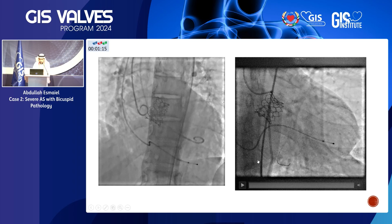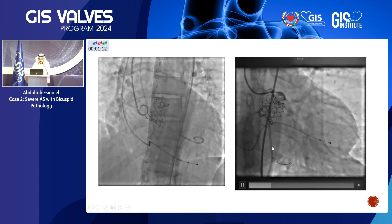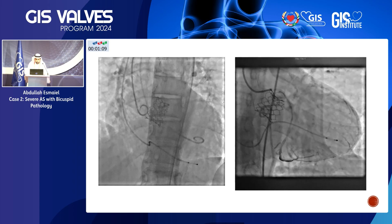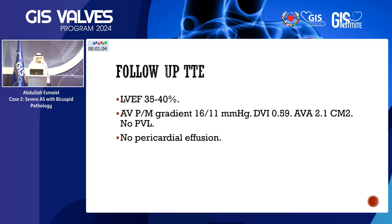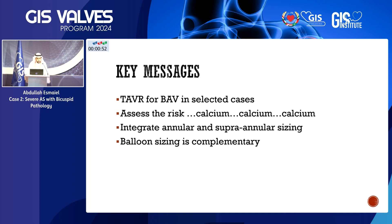The final result showed no leak and minimal gradient. We proceeded to fix the circumflex in the same setting and left the LAD and RCA for a staged procedure. His most recent echo done last week showed EF 35–40%, mean gradient 11, DVI 0.59, no pericardial effusion. My key message: TAVR for bicuspid aortic stenosis is for selected cases. Assess the risk — it's calcium, calcium, calcium: calcium of the leaflets and calcium of the raphae. Integrate annular and supra-annular sizing methods, and balloon sizing is complementary to your initial sizing strategy.